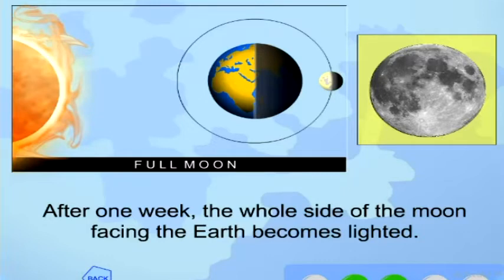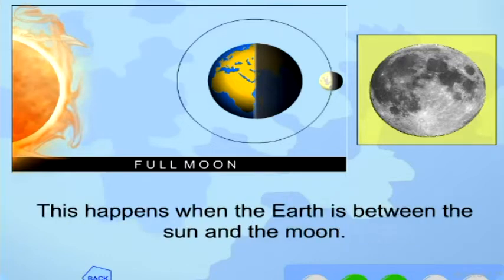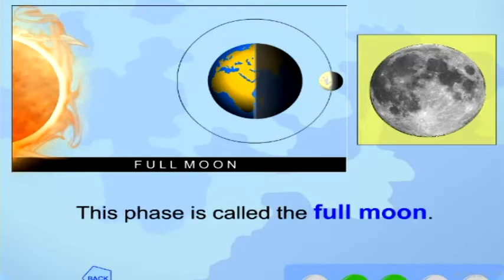After one week, the whole side of the moon facing the Earth becomes lighted. This happens when the Earth is between the sun and the moon. This phase is called the full moon.